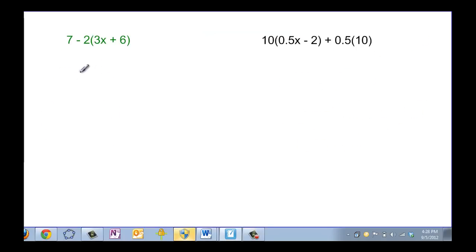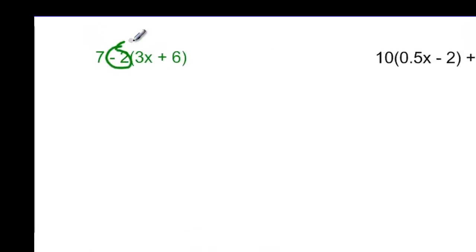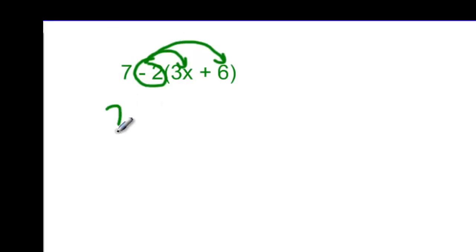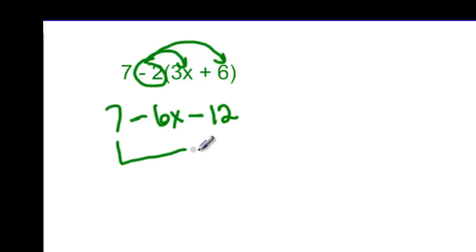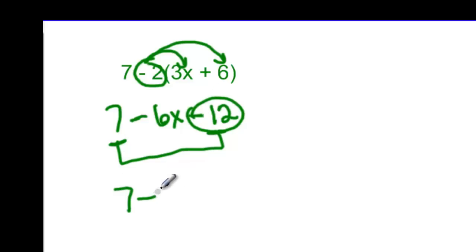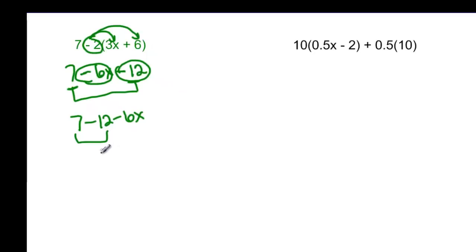Two more problems — still simplifying. We've got to distribute here, but remember when you have expressions like this you have to take the sign with it: carry the sign and distribute to everything inside. So I have the 7, then negative 2 times 3x gives negative 6x, and negative 2 times positive 6 would be negative 12. Then I have like terms — the constants — but they're not next to each other, so we rewrite: 7, then take the sign minus 12, then minus 6x. 7 minus 12 is negative 5, so the final answer is negative 5 minus 6x.